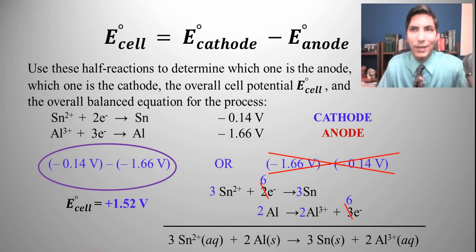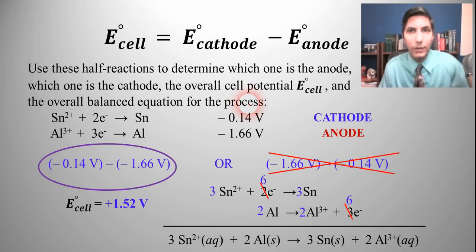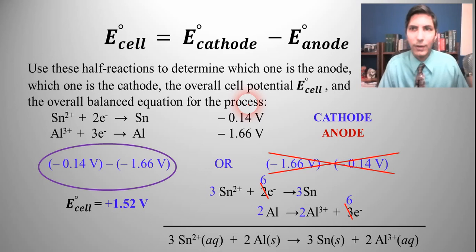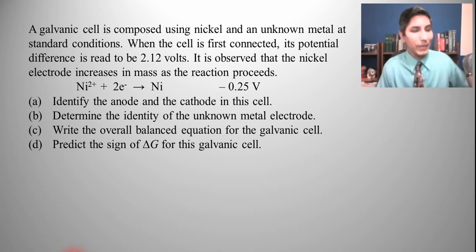That's how we solve galvanic cell problems using E-cell = E-cathode minus E-anode — a fairly straightforward method. Remember, E-cell in a galvanic cell always has to be positive. Just like a AA battery has a positive 1.5 volts stamped on it — if a battery said negative 1.5 volts, do not buy it. There's something wrong with it, and it probably couldn't exist.